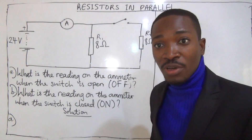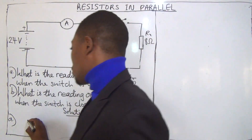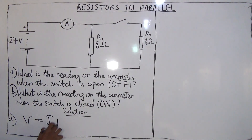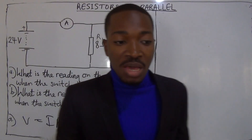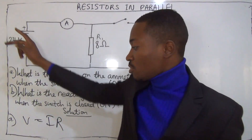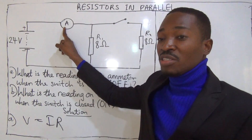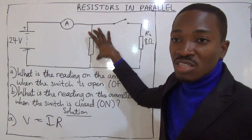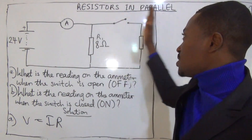How do I find the current flowing in that circuit? I will use Ohm's law: V equals IR. Where V is the EMF of the cell, which is 24V. I is the current, which is the reading of the ammeter. And R is the resistance, which is R1.